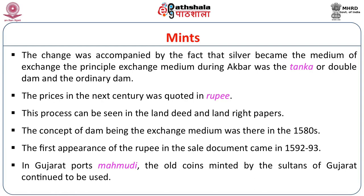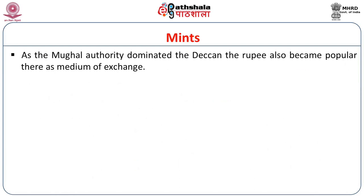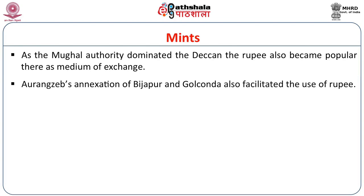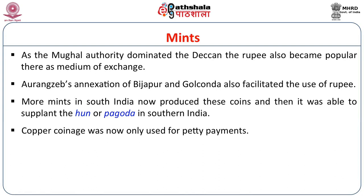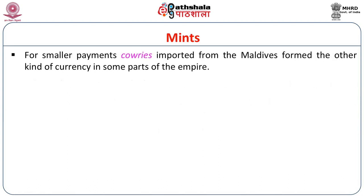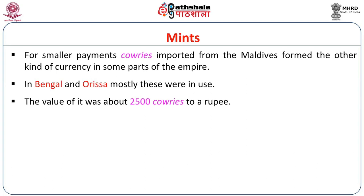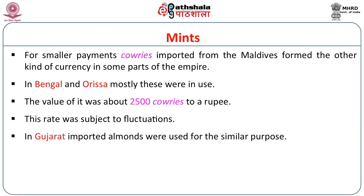Apart from Mughal coins, other standardized coins were also in use. As Mughal authority dominated the Deccan, the rupee became popular there too. With the expansion of the empire during Aurangzeb into Bijapur and Golconda, rupee use was facilitated, with more mints in South India replacing the Hun or pagoda. Copper coinage was now used only for petty payments. For smaller payments, something called cowries was very popular in the coastal regions of Bengal and Orissa — the value of one rupee being around 2,500 cowries. In Gujarat, imported almonds were used for the same purpose as cowries were used in Bengal.